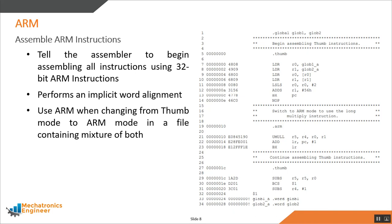If a source file uses a mixture of Thumb and ARM instructions, you need to use the ARM directive to switch to ARM mode. As you can see in this listing file, when the ARM directive is used, all the instruction sizes are 32-bit wide.